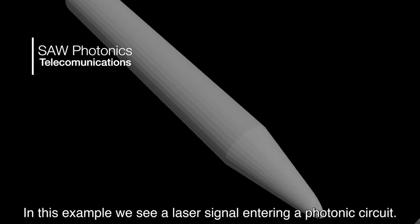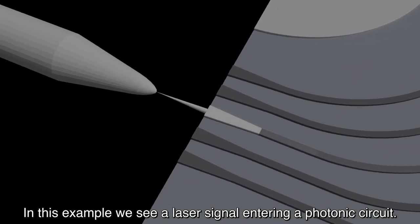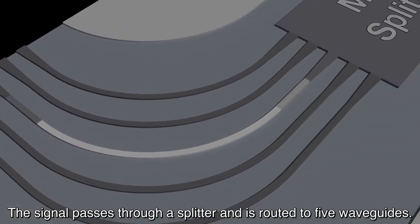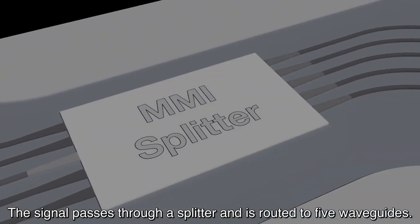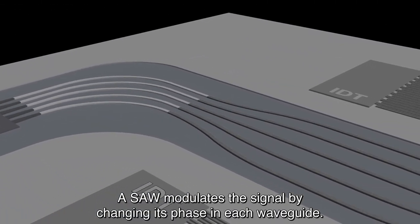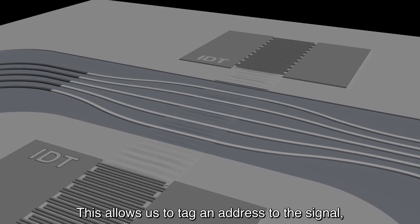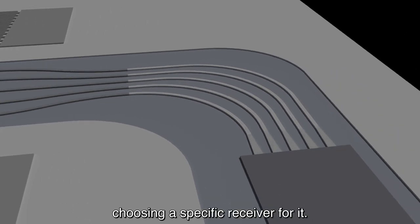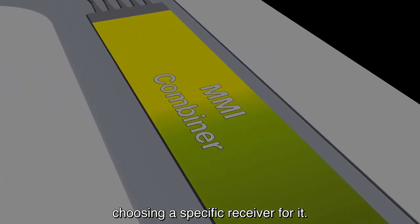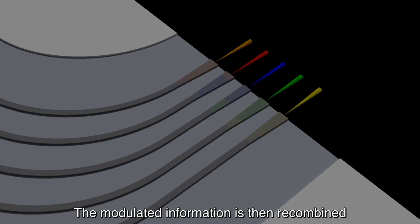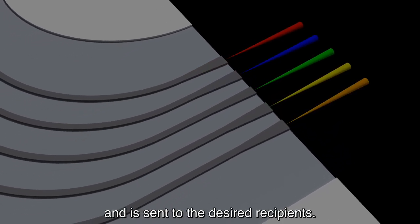In this example, we see a laser signal entering a photonics circuit. The signal passes through a splitter and is routed to five waveguides. A SAW modulates the signal by changing its phase in each waveguide. This allows us to tag an address to the signal, choosing a specific receiver for it. The modulated information is then recombined and is sent to the desired recipients.